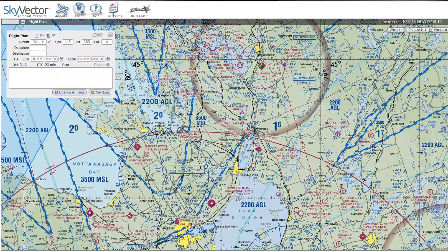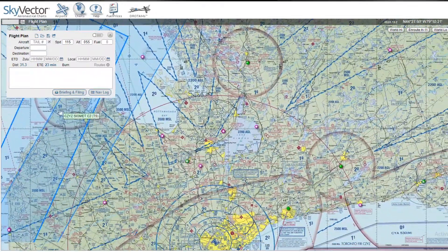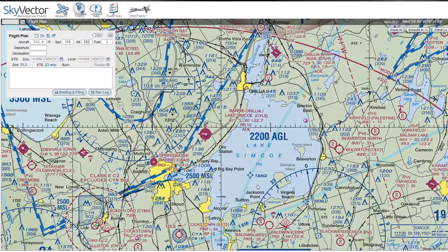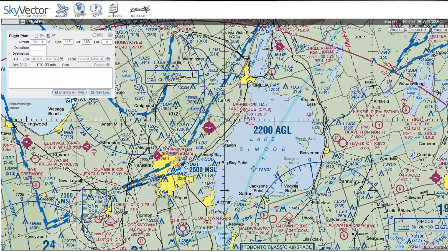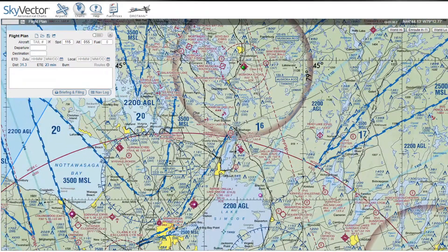We're going to be using Sky Vector as an example. Sky Vector is basically aeronautical data that you can use, and it's a great way of just taking a look at basically the entire world and seeing all the airports around. We're going to be departing from Muskoka, so C-Y-Q-A, heading southwestbound to Lake Simcoe — that'll be C-Y-L-S. You're more than welcome to follow along. It's a pretty short flight, about 20 minutes. Let's go ahead and type this in.